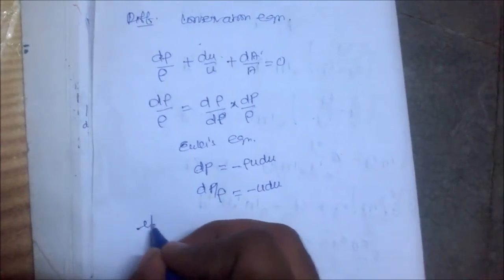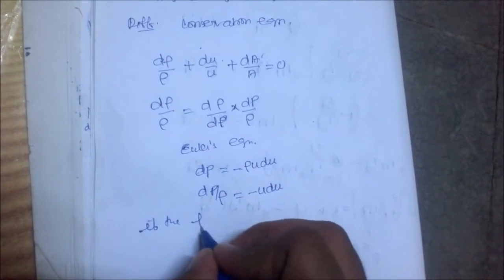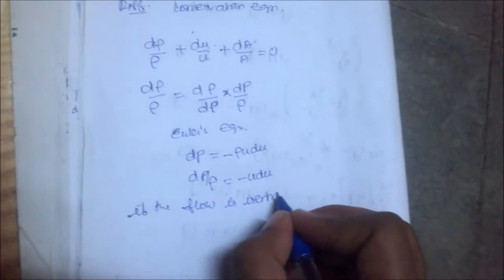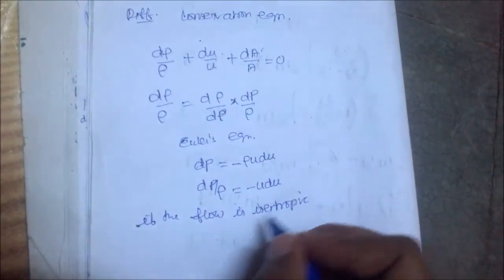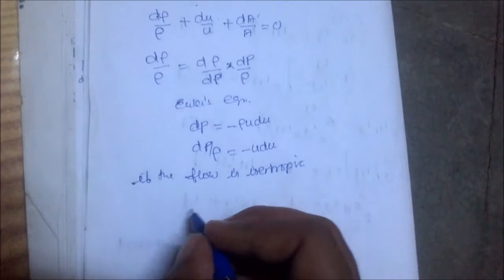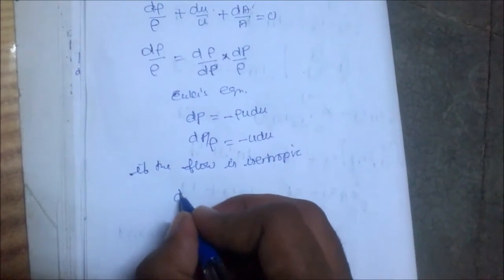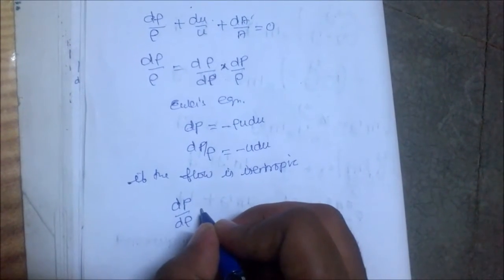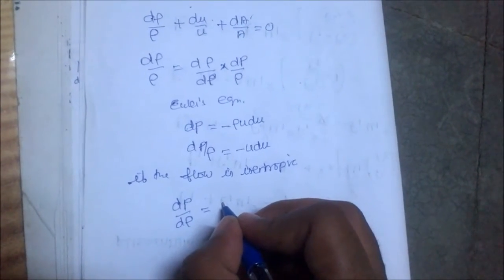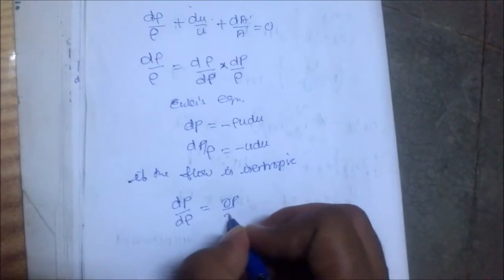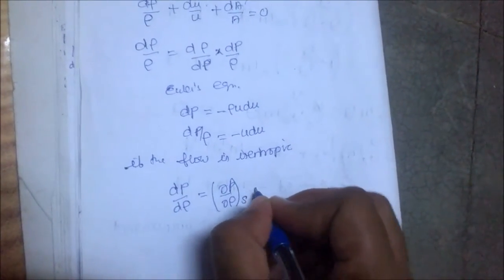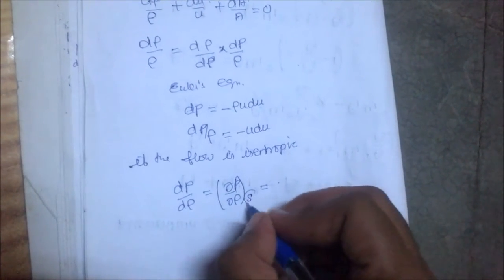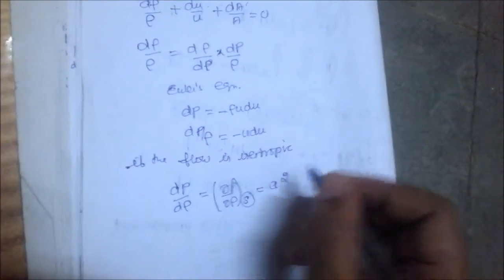If the flow is isentropic, then we can write dp/d rho at constant entropy equals a squared, where a is the speed of sound.